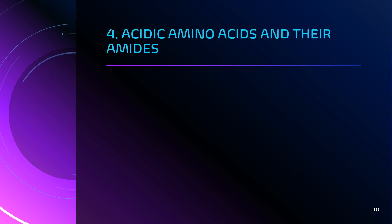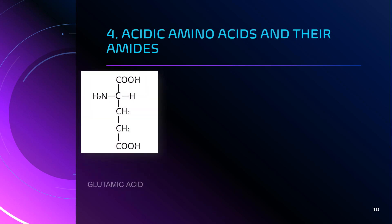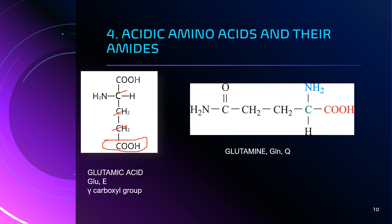The second acidic amino acid is glutamic acid, represented as GLU, and the single-letter code is capital letter E. It has a gamma carboxyl group — the alpha carbon, beta carbon, and gamma carbon form the chain, and the extra carboxyl group is attached to the gamma carbon. Its amide is glutamine, represented as GLN, and the single-letter code is capital letter Q.